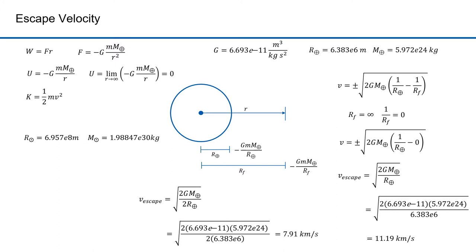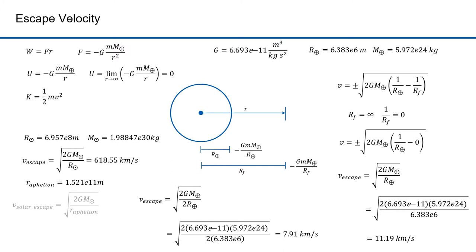11.19 kilometers per second is enough to escape earth orbit, but what about the sun? The radius and mass of the sun give an escape velocity from the surface of the sun of 618.55 kilometers per second — substantially higher than earth escape velocity. If you're escaping from the earth, however, you're not that close to the sun. The distance from earth's aphelion to the sun is 1.51 times 10 to the 11th meters. Computing the solar escape velocity from that point, assuming early July when earth orbit is at aphelion, gives 41.83 kilometers per second. So 11.19 kilometers per second will get you out of earth's gravity, but then you'd enter a solar orbit. To exit the solar system you'd have to go 41.83 kilometers per second.